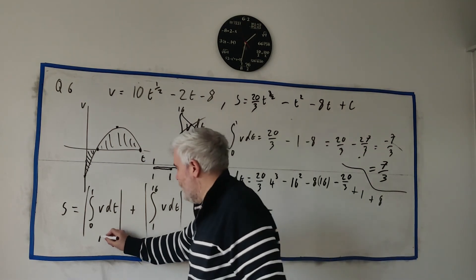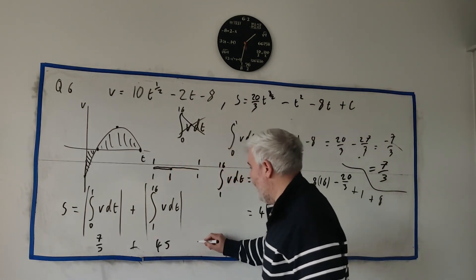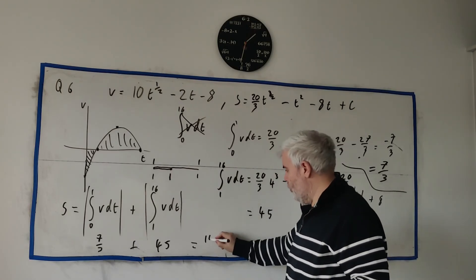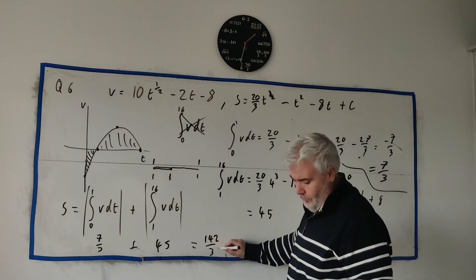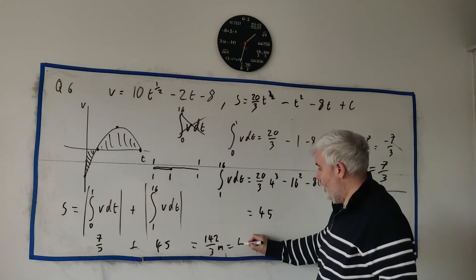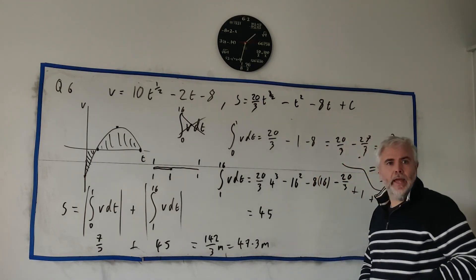So this first one is 7 over 3. This one 45. We add them together. Our final answer is 142 over 3 metres. Or to put that into 3 significant figures, 47.3 metres.